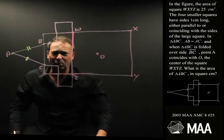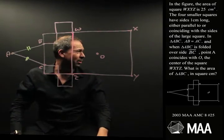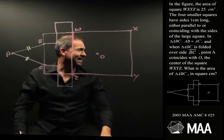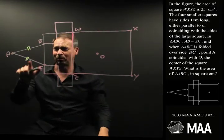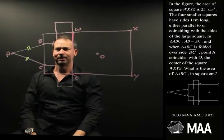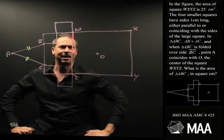That's the setup for the question. What's the actual question? What is the area of triangle ABC in square centimetres? Oh, heavens.